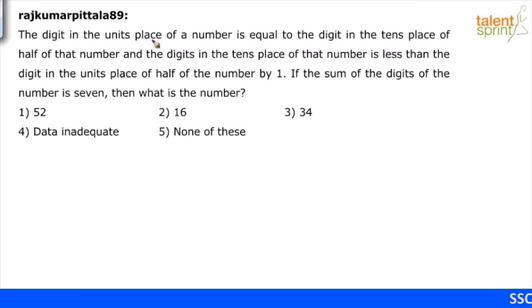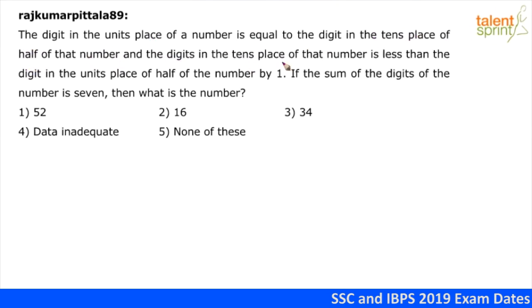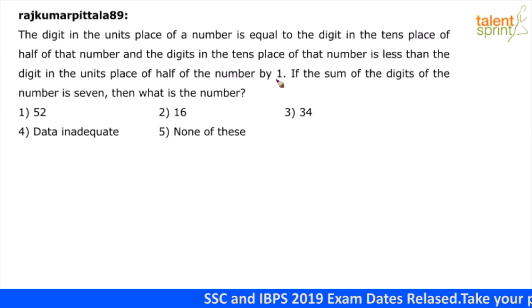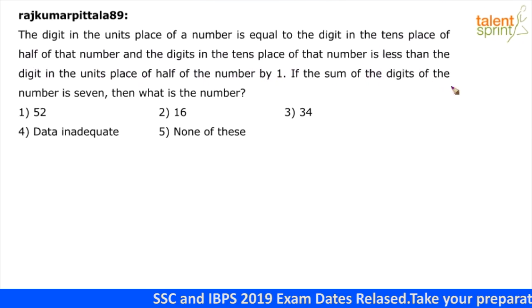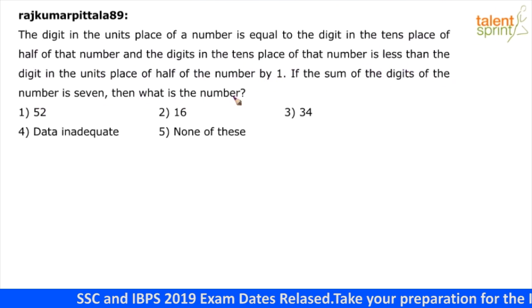The digit in the units place of a number is equal to the digit in the tens place of half of that number. The digit in the tens place of that number is less than the digit in the units place of half of the number by 1. If the sum of the digits of the number is 7, then what is the number?